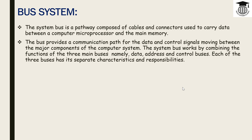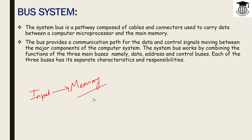As we know, the computer is an electronic device, so data is going to flow. Data from memory goes to the ALU, ALU performs the operation, and then the result is shown through the output devices.